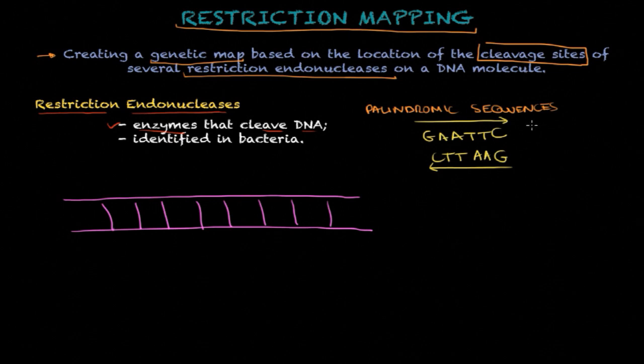This is a specific sequence for a restriction endonuclease, very popular one, called ECO-R1. These restriction endonucleases are able to find these palindromic sequences in a DNA molecule, recognize them, and then cleave the molecule.